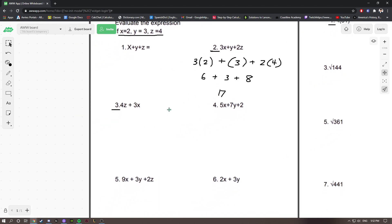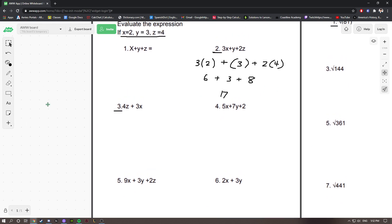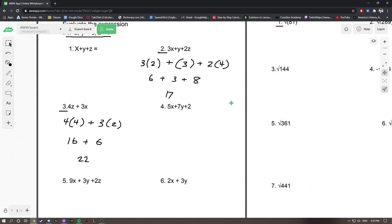And then here we have 4z plus 3x. Let me scroll up so we can see our values again. 4z, 4 times 4 plus 3x, 3 times 2. 4 times 4 is 16, plus 6 is 22. And we don't see a y here, so we don't substitute it in this problem.